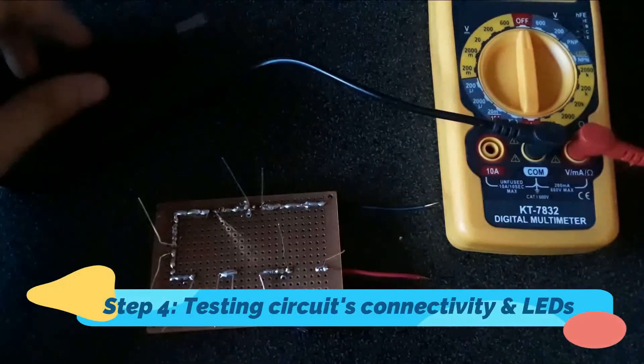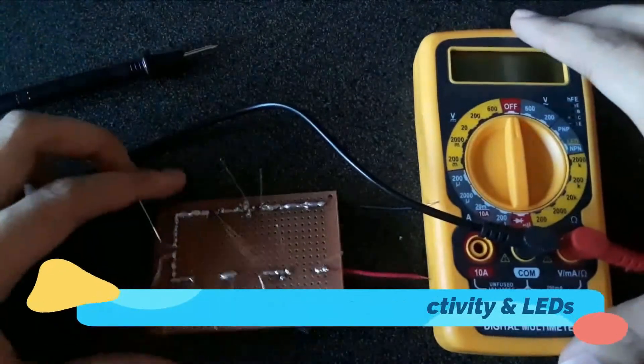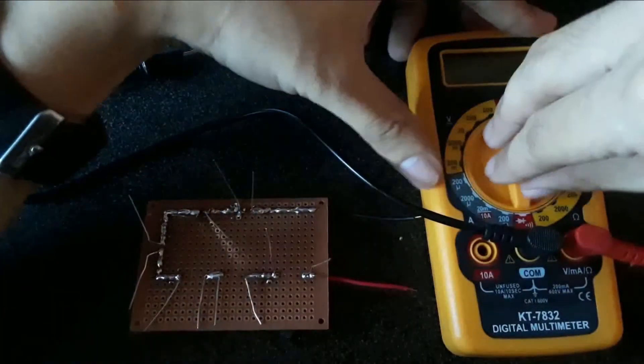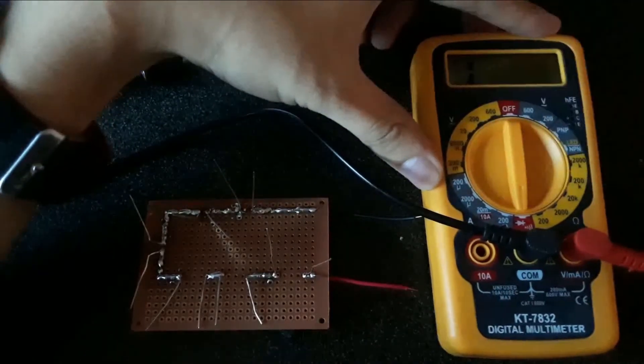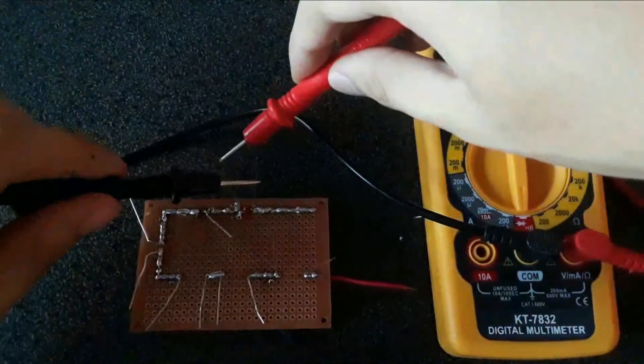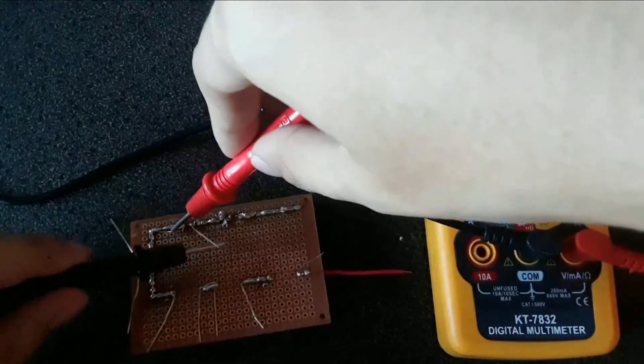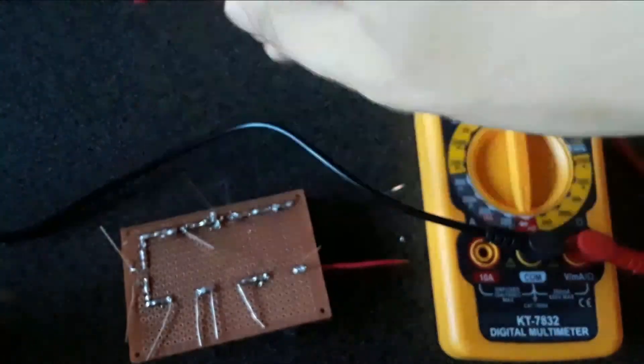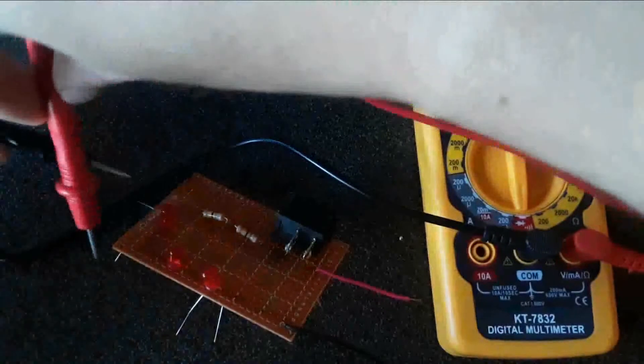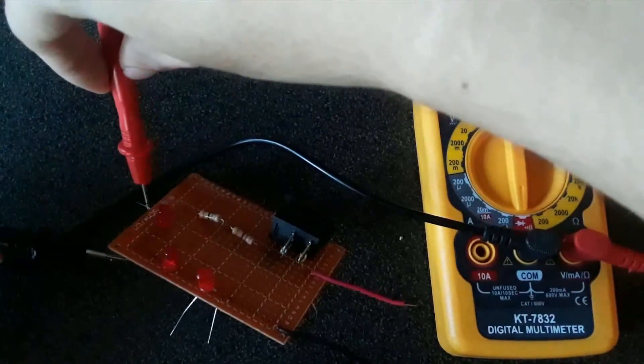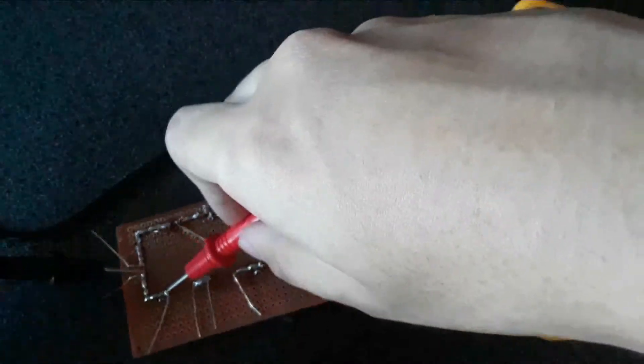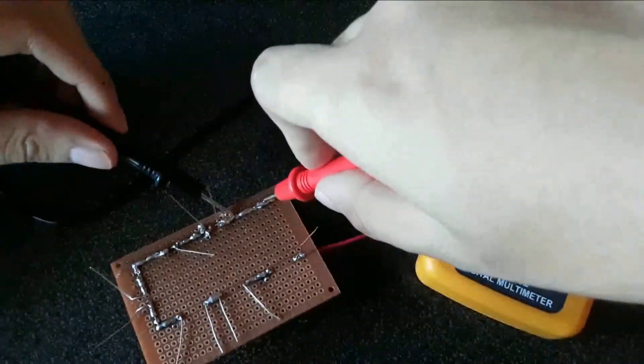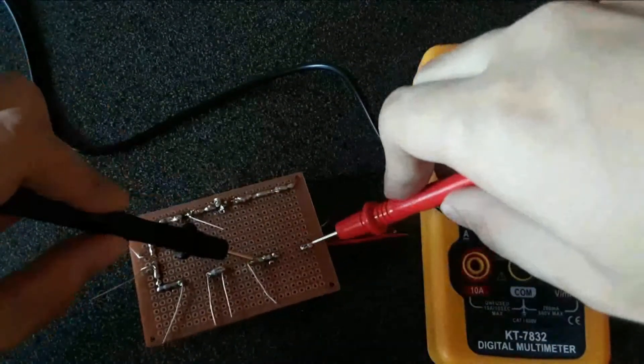Step 4: Testing circuit connectivity and LEDs. Let's set our multimeter to the beep position. Then test each LED to see if it will light. Then, let's apply continuity testing in every connection. It should beep to say that each ends are connected.